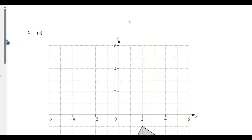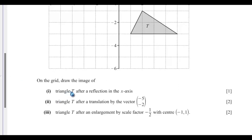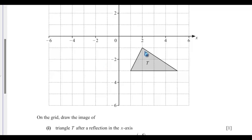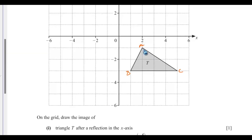Question 2a. On the grid, draw the image of triangle T after the reflection in the x-axis. The best practice is to label the vertices of the triangle. So I can call this A, B, and C. This is the line of symmetry or the mirror line — that is the x-axis. To reflect this, we just count from each of the points to the line of symmetry or reflection line.